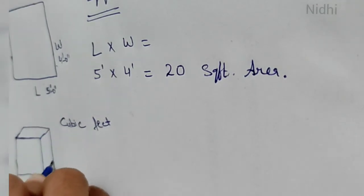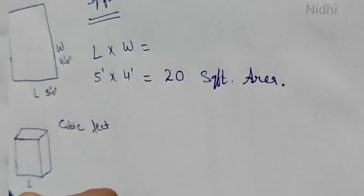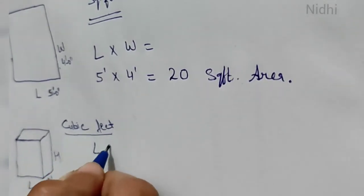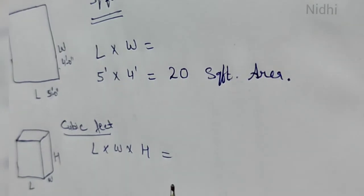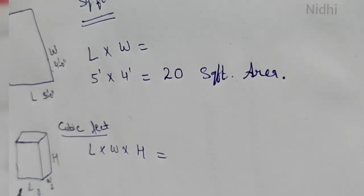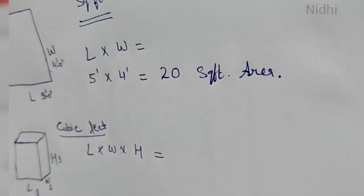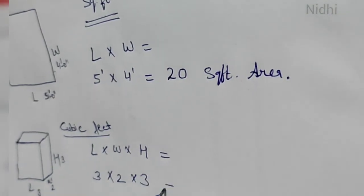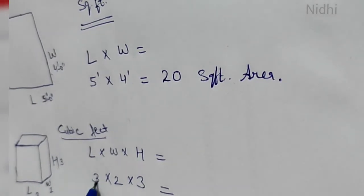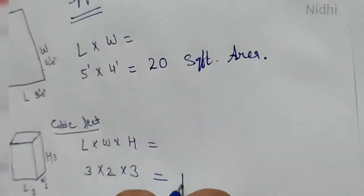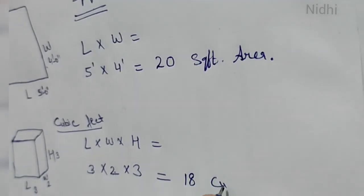For cubic feet we need length, width, and height. For example, length is three, width is two, and height is three. So we multiply: three multiplied by two is six, six multiplied by three is eighteen. So the answer is 18 cubic feet.